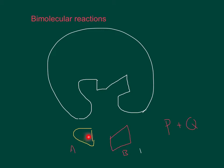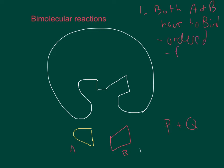You can have them enter sequentially where A binds first and then B, or it could be random where B could bind and then A, or A could bind and then B, and it doesn't matter the order. There are two possibilities for bimolecular enzyme reactions. The first is that both A and B have to bind before any reaction can happen, and that can happen in an ordered way or a random way.